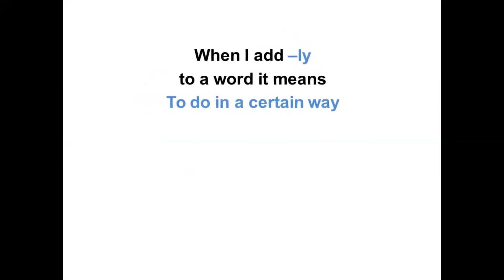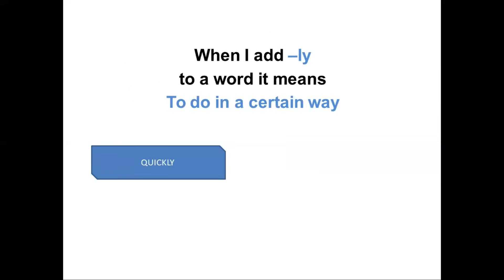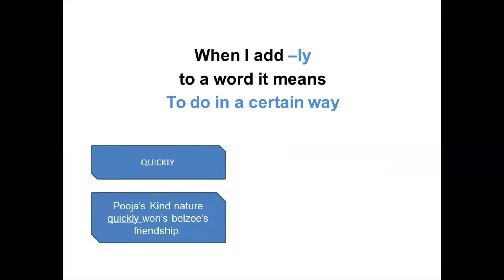When we add 'ly' at the end of a base word, it means 'to do in a certain way.' For example, 'quickly' — Pooja's kind nature quickly helped build friendship.